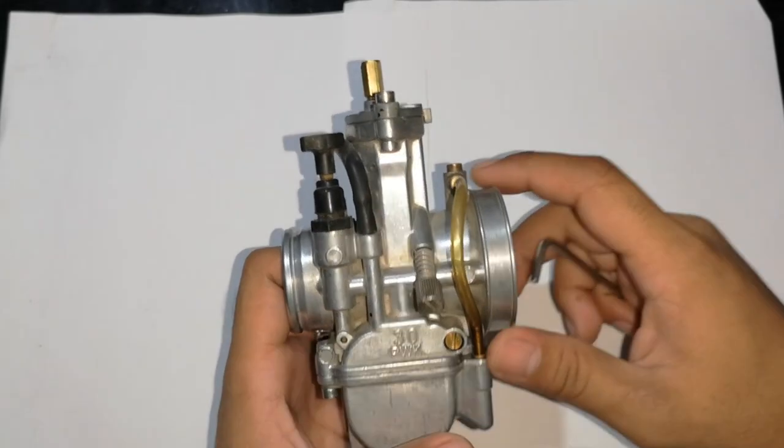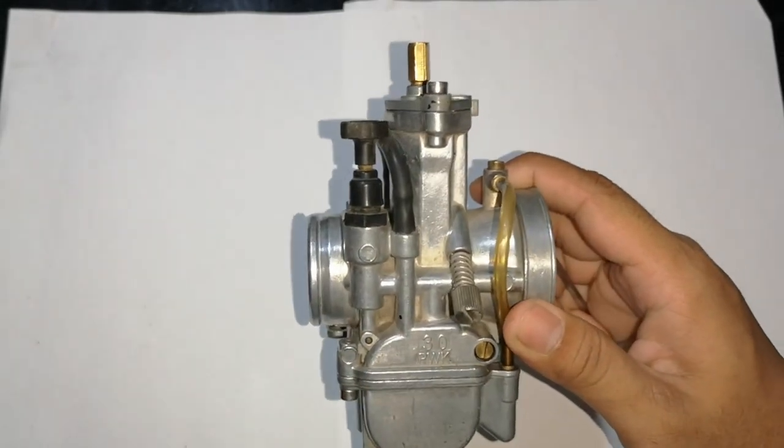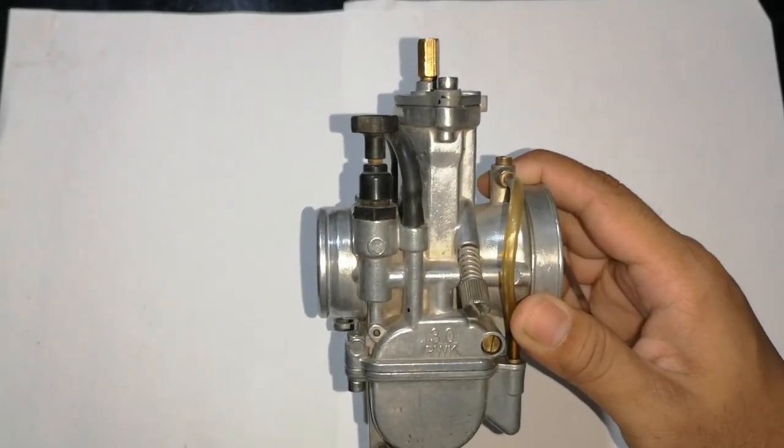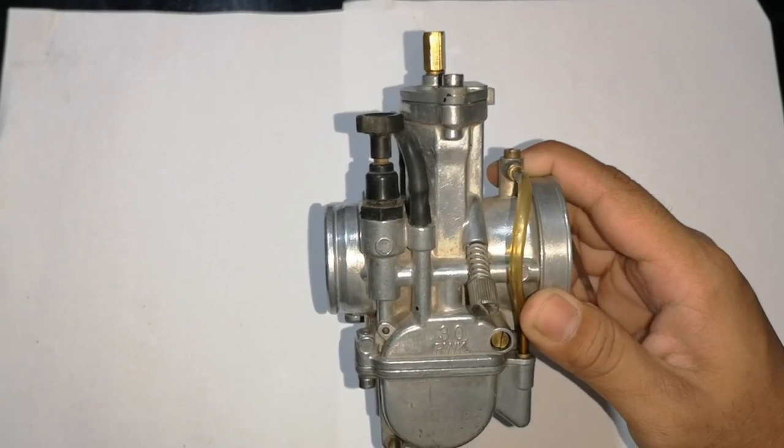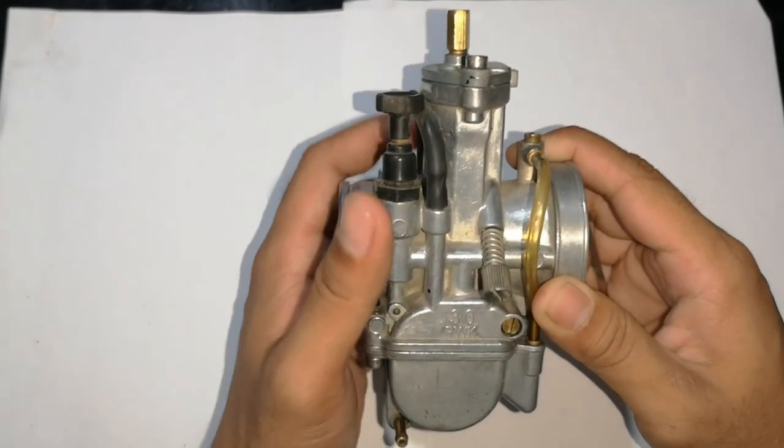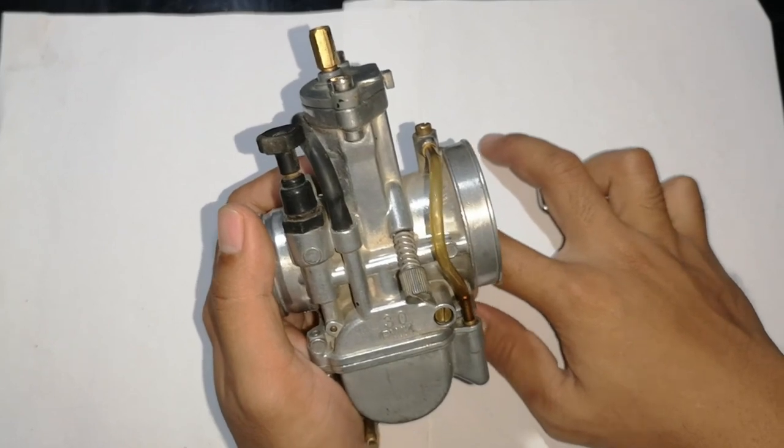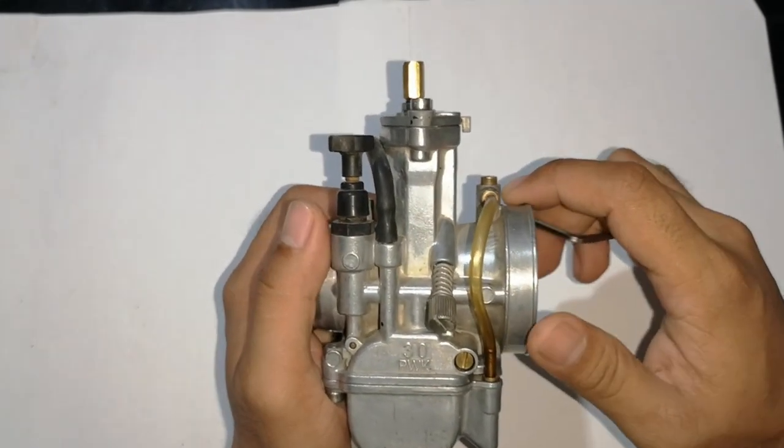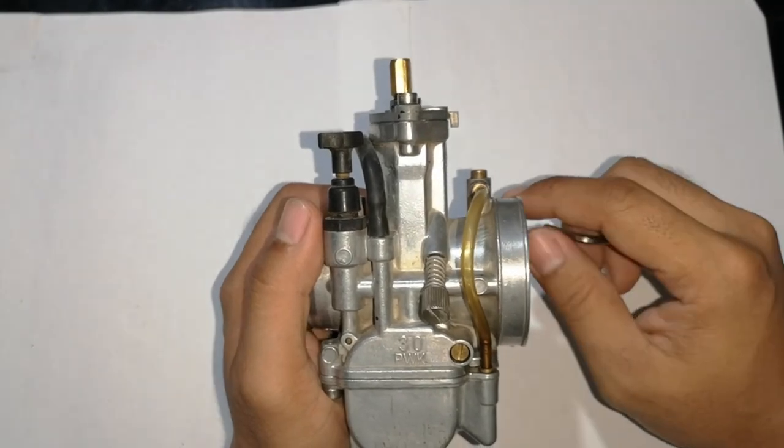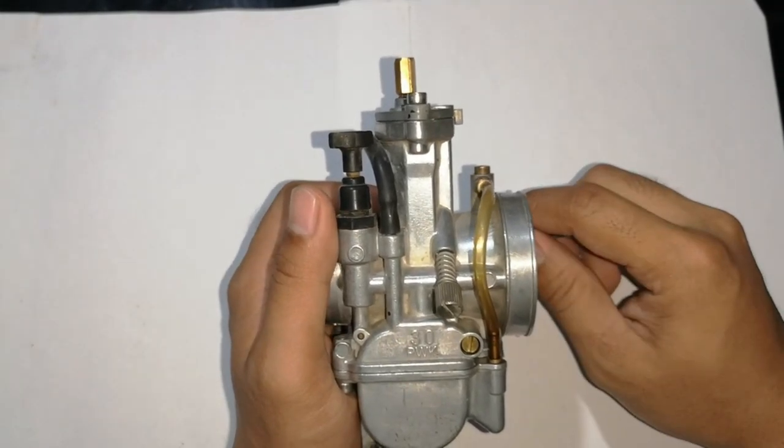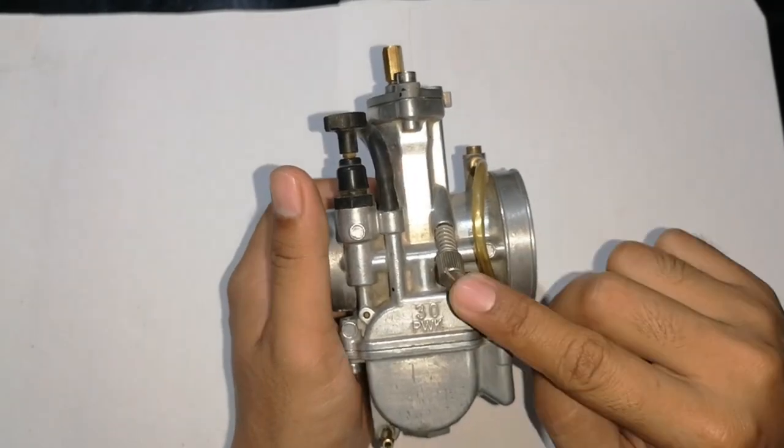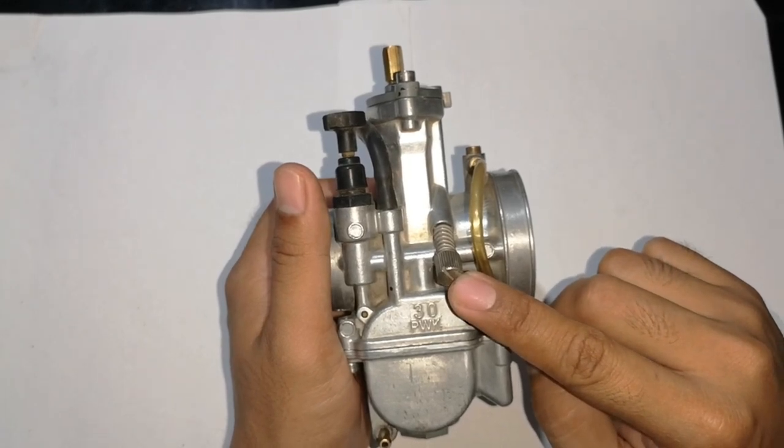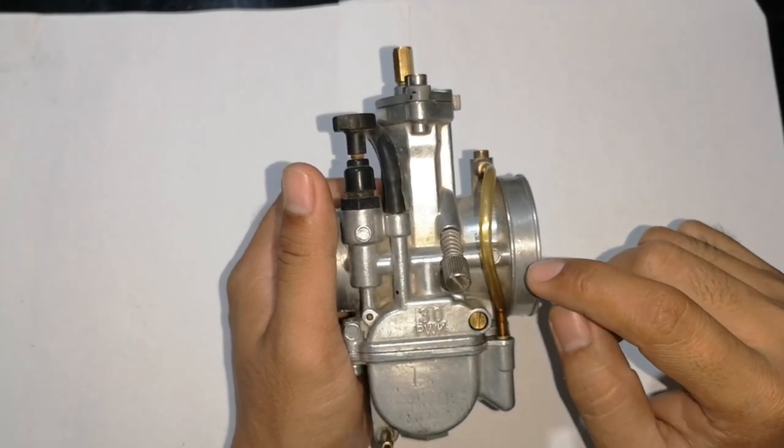Okay guys, meron tayo dito ngayong karburador 30mm, kaso flat slide lang, pero pariha din naman ito sa mga ibang klase ng karburador. I-determine lang natin ang mga parts, or i-explain ko lang sa inyo kung ano yung mga parts ng karburador at ang functions nito. So nakikita nyo dito, dito na side, meron tayong idle screw or idle speed screw, or yung tinatawag natin minor.